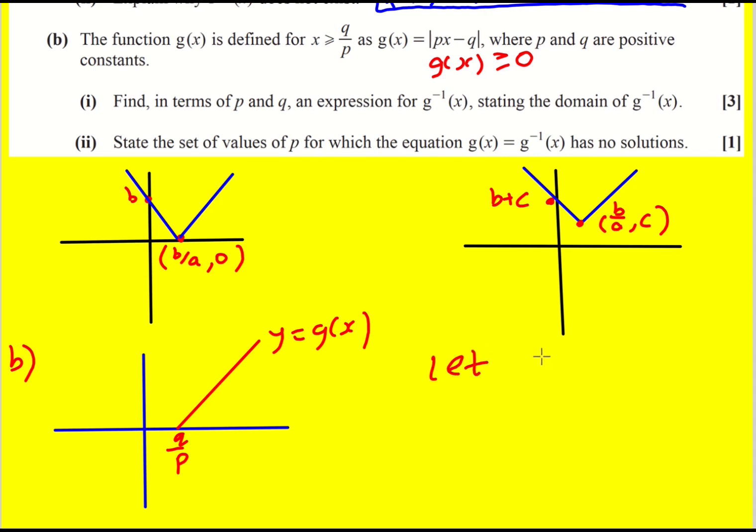Now to find the inverse I'm going to let y equal... Now I don't need to let it equal the modulus of px - q because I can see I've gone beyond the critical point and actually it's just the same thing but without the modulus. So I'm going to make x the subject because I'm going from y through some sort of function machine to get x and the inverse is when you go the opposite way. px equals y plus q. That means x is (y + q)/p.